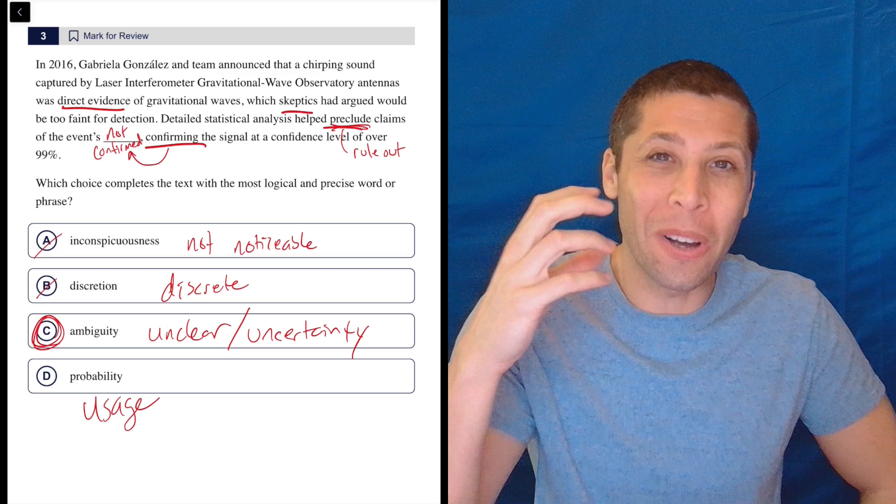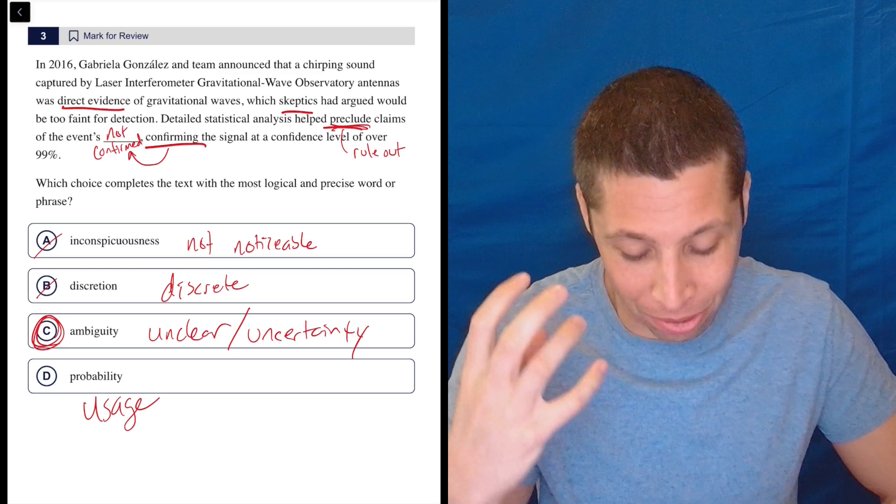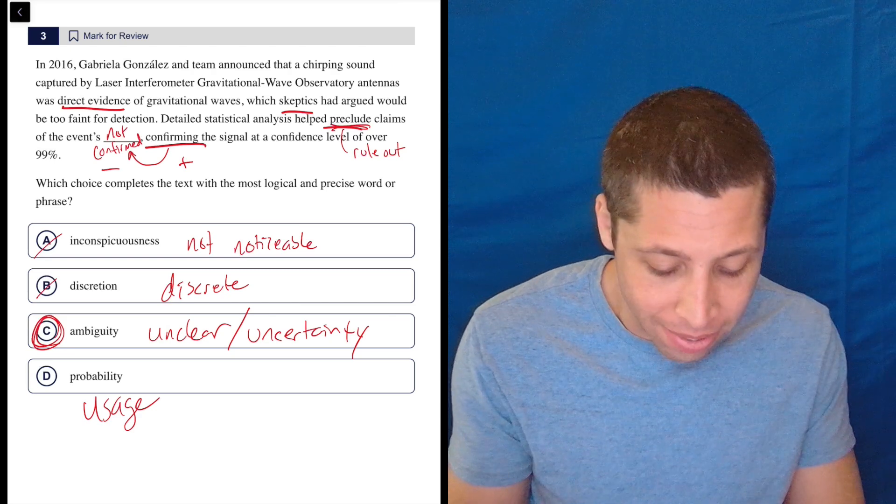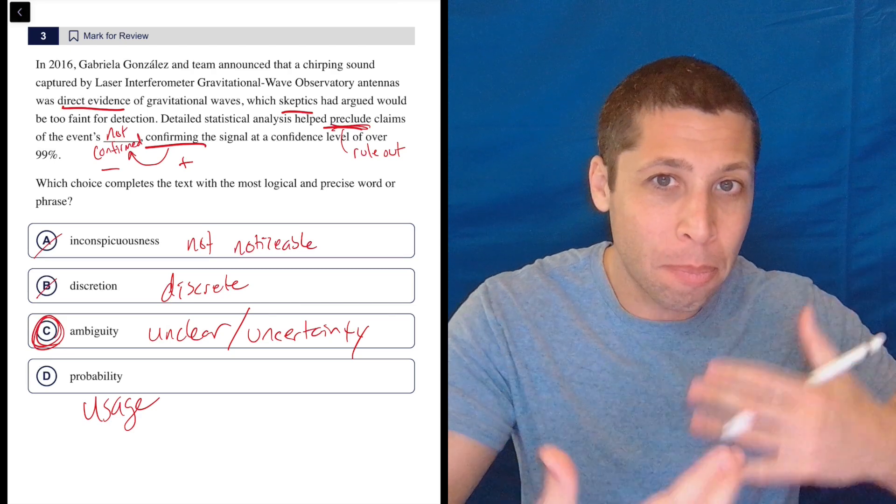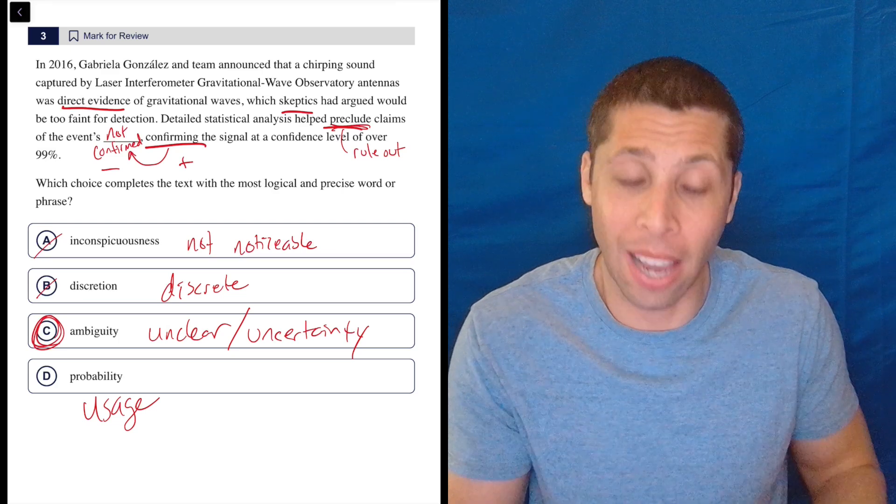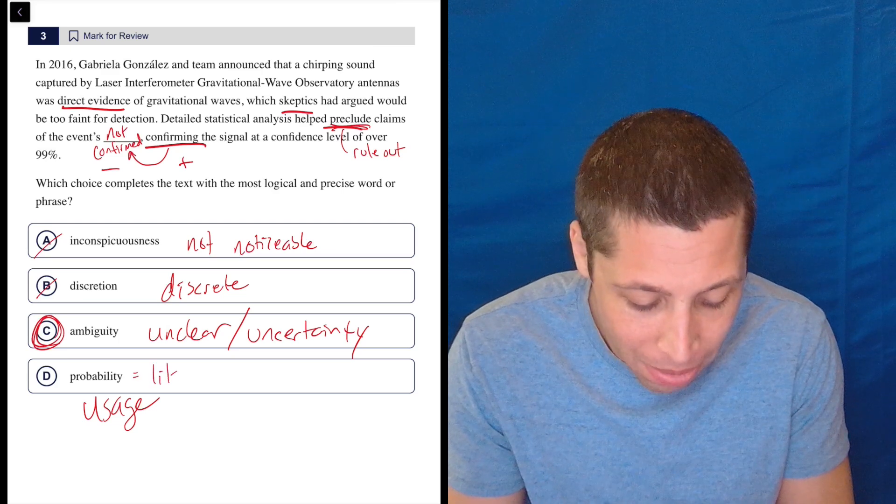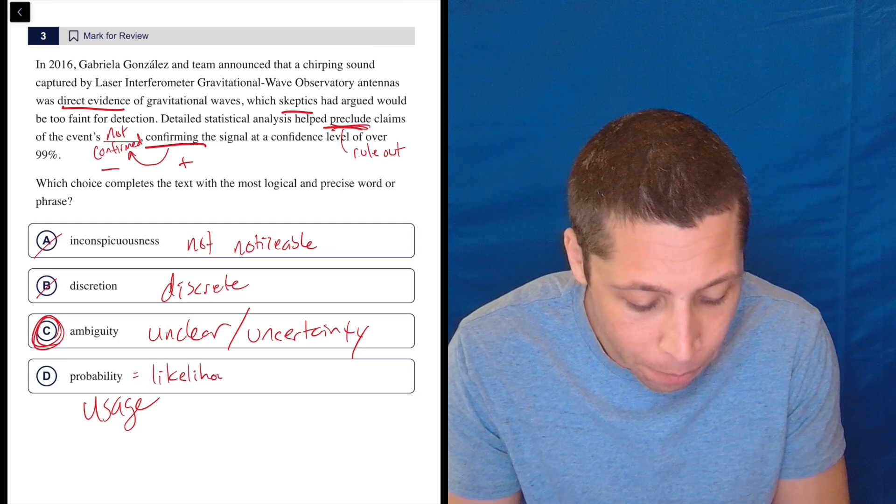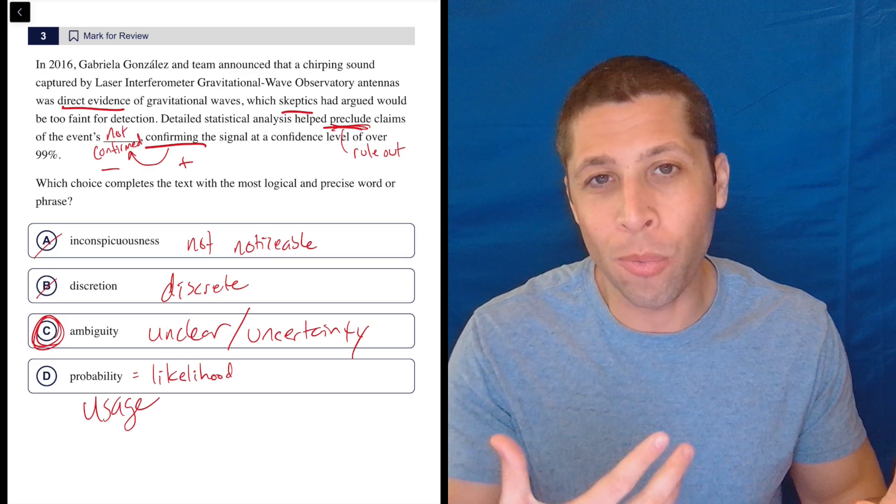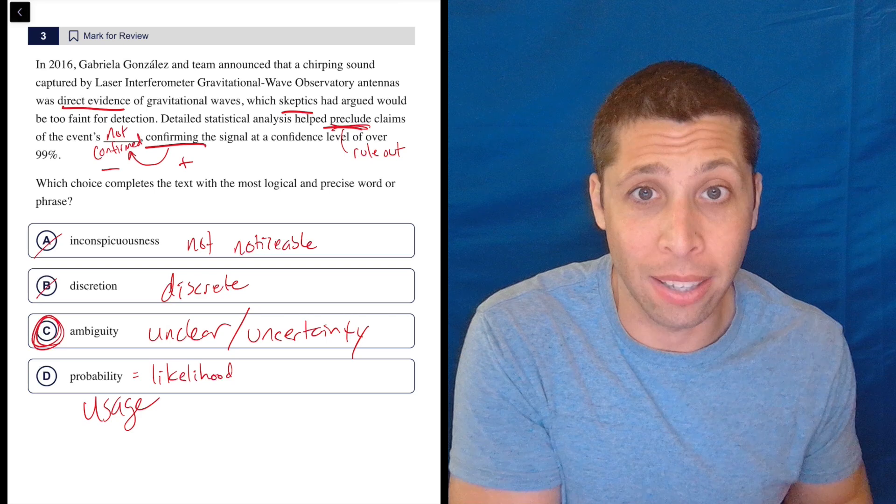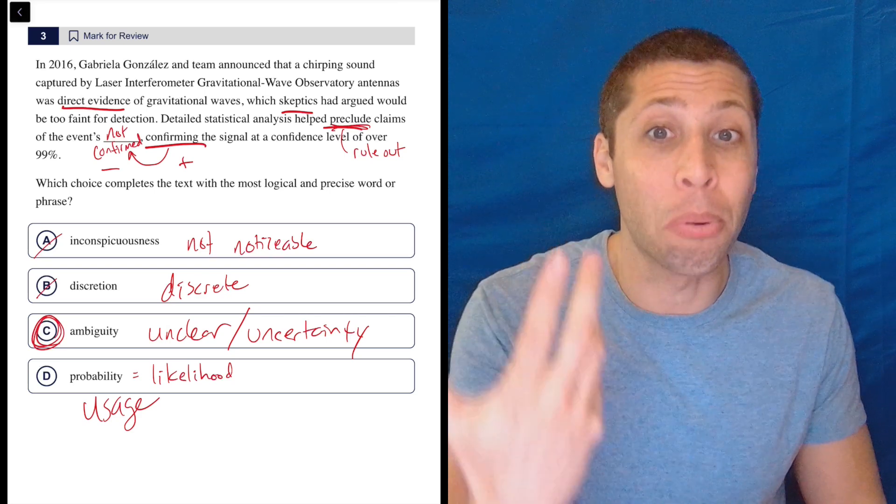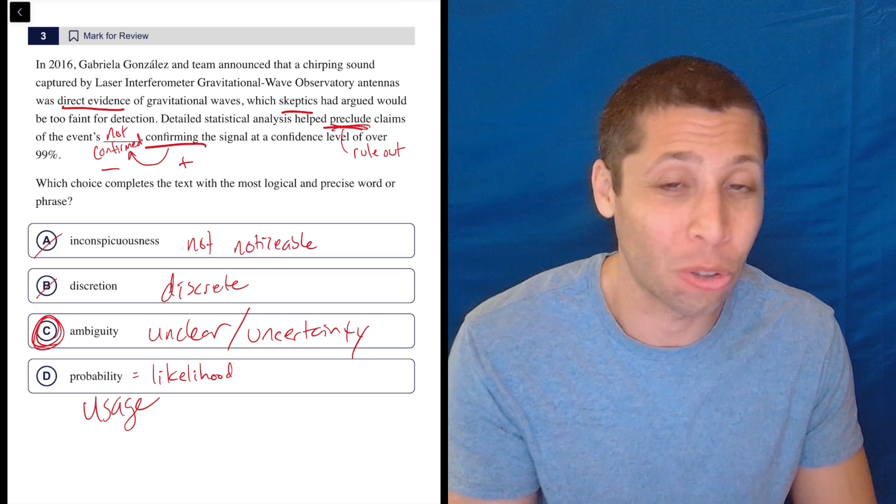So we're not ruling out that it's probable. We are confirming that it is definite. It's just very backwards. We really want more of a negative word here. Not confirmed is negative. Confirmed is positive. If something has probability in this sense, I would be saying that it's likely. So that's kind of what this means - it means likelihood. But if people are skeptical of it, then we're not ruling out its likelihood. We are confirming its likelihood. We're ruling out the fact that it's improbable is more what we're trying to say.